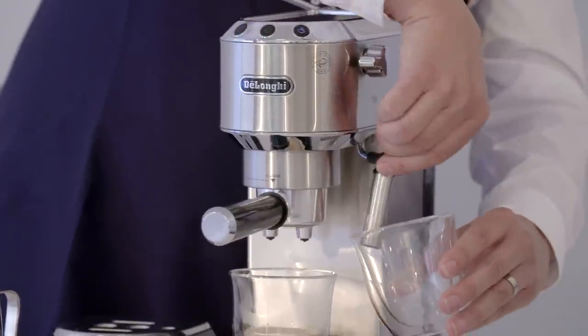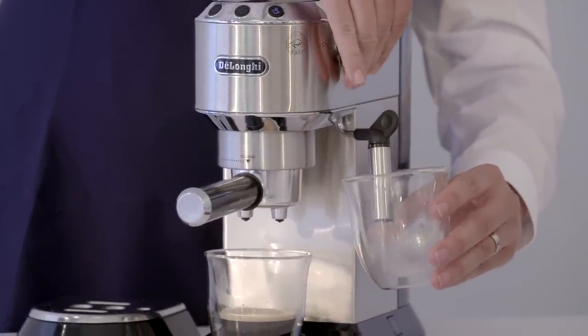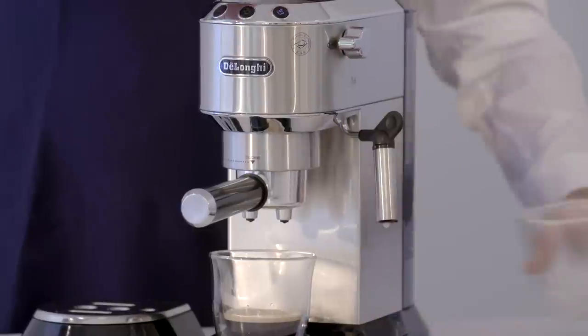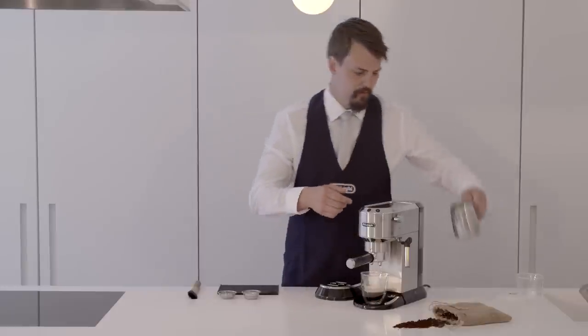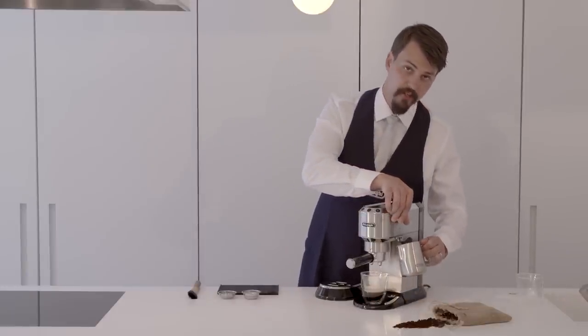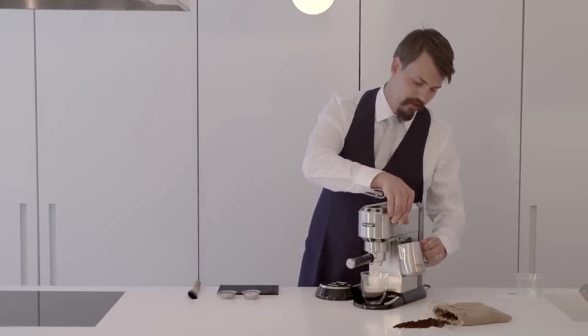We'll gently purge the steam wand to get rid of any water that is left behind. Then take our milk, simply place it a couple of millimetres underneath the surface of the milk and turn on.